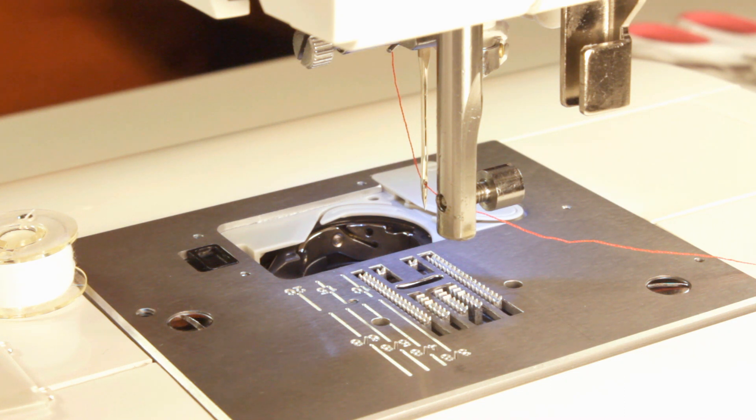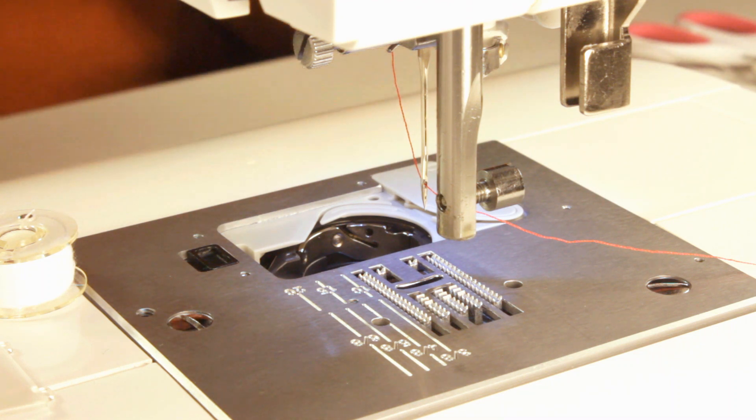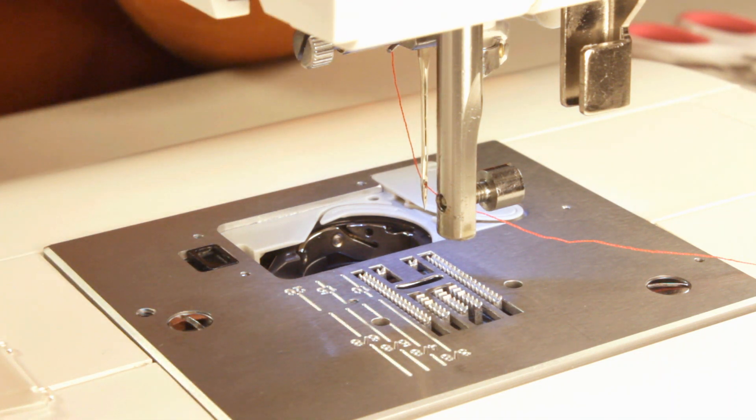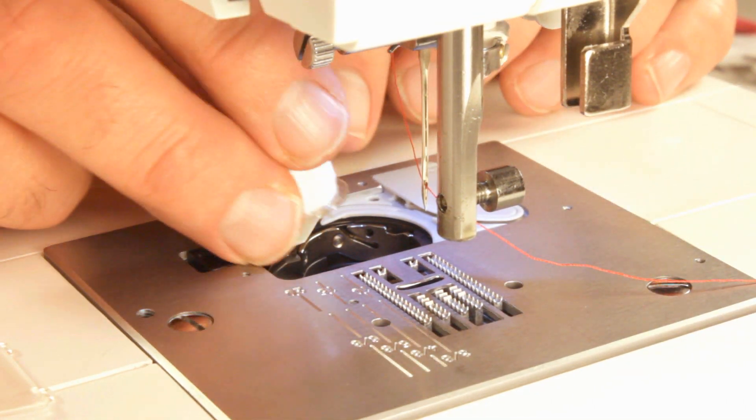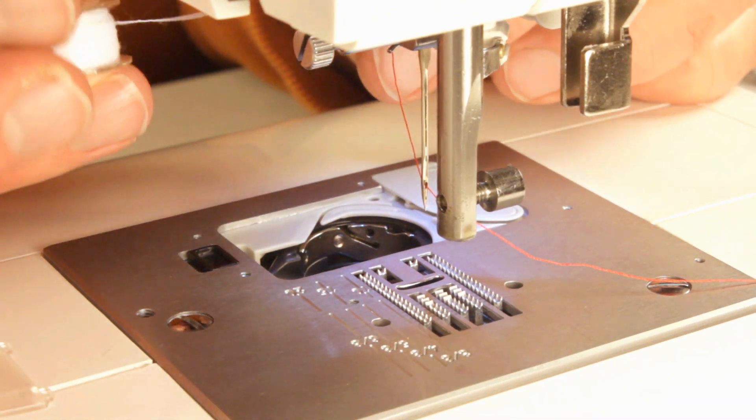We're going to use a standard weight thread. This is a Coats and Clark Dual Duty XP thread. I've got red in the top, and I've got white in the bottom.